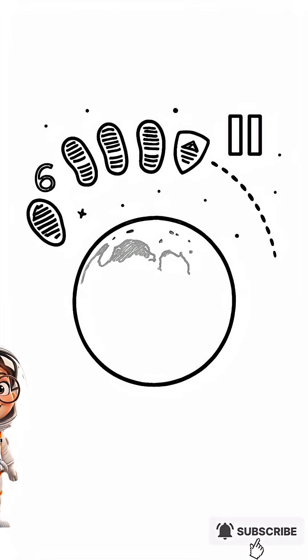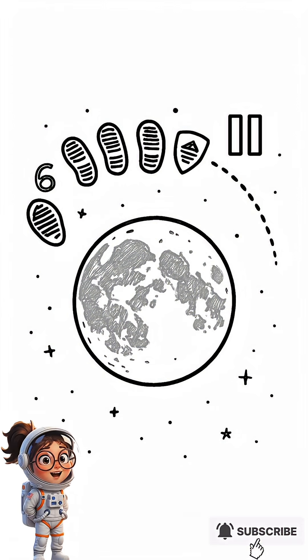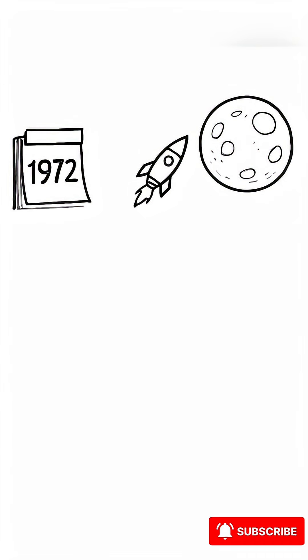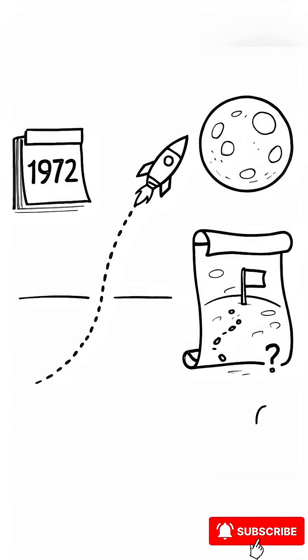Ever wonder why we landed on the moon six times and then just stopped? After 1972, no one went back for over 50 years. It's like we found a new continent, planted a flag, and then decided to never visit again. So what happened?